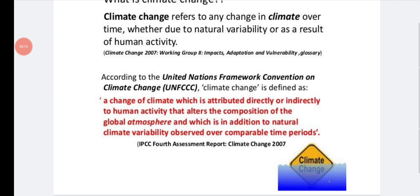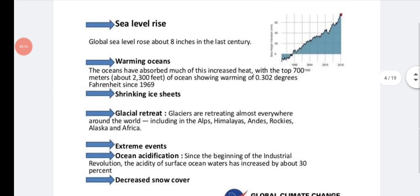So what we have seen in the recent years is sea level rise - there was an 8 inch rise in the global sea level during the last century and the warming oceans. The oceans have absorbed much of this increased heat with the top 700 meters of ocean showing warming of 0.302 degrees Fahrenheit since 1969. So there was increased warming of the ocean. There was a shrinking of ice sheets because the glaciers were melting due to global warming and because of this there was a sea level rise.